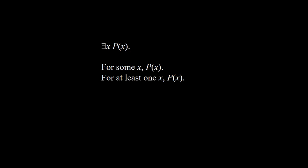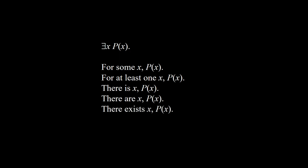For 'for some x p(x)' is a proposition. We use the notation ∃x p(x), which stands for: for some x p(x), for at least one x p(x), there is x p(x), there are x p(x), and there exists x p(x).